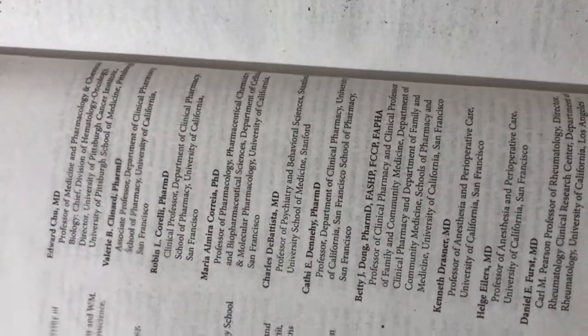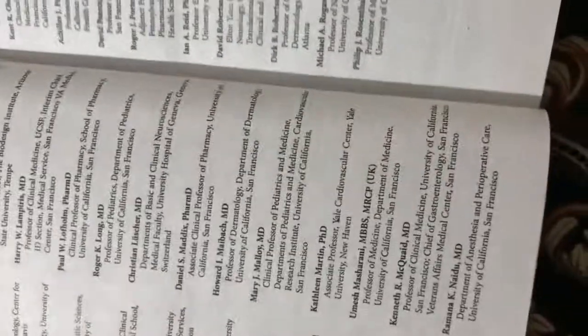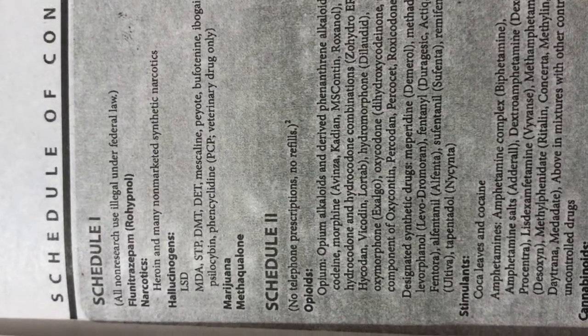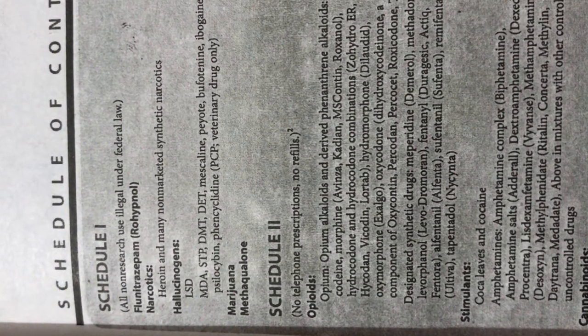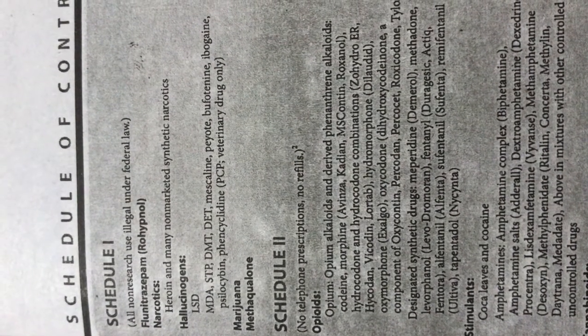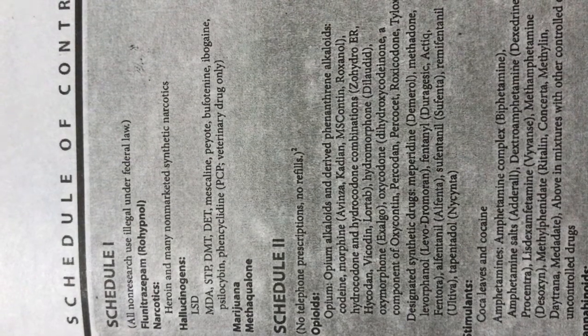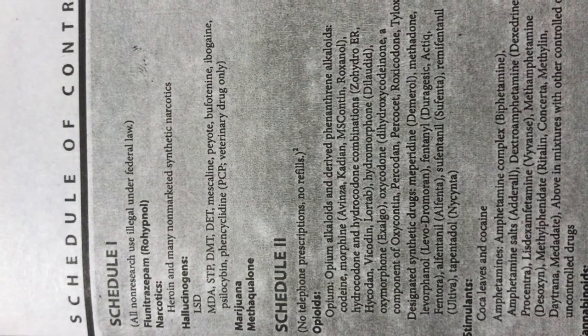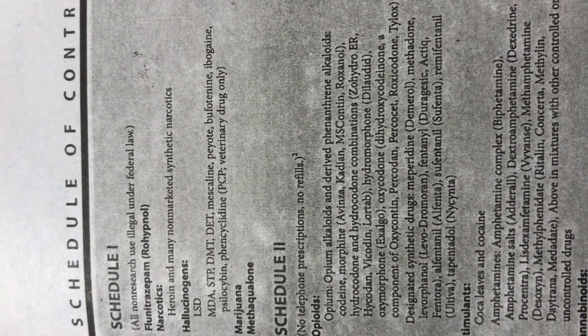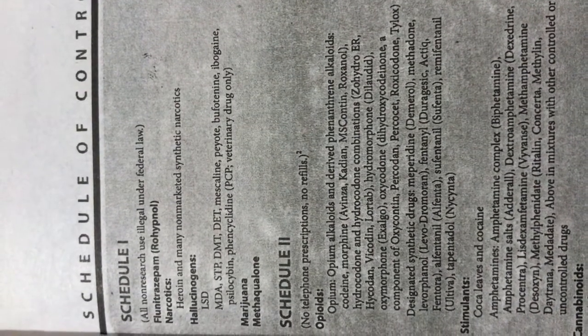On the next page we have the authors' names — a properly managed page — followed by another authors' page with quite a long list of contributors. Then we have the schedule of controlled drugs. Schedule number one includes flunitrazepam (Rohypnol), narcotics such as heroin, and many non-marketed synthetic narcotics, as well as hallucinogens: LSD, MDA, STP, DMT, mescaline, peyote, ibogaine, psilocybin, phencyclidine (PCP), veterinary drugs only, marijuana, and methaqualone.